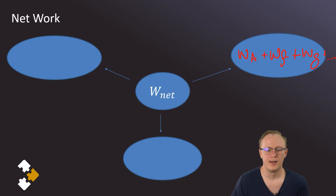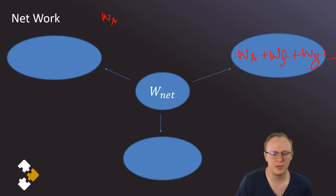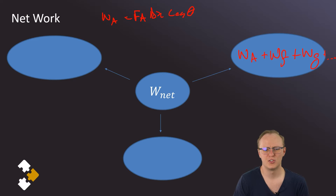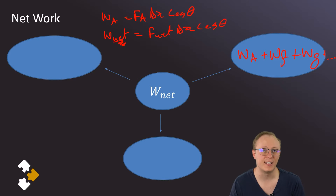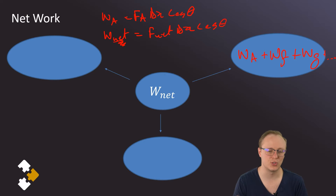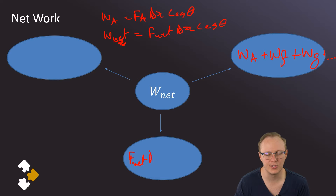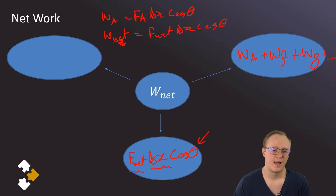That's one way to find the net work. The other way: the work done by an applied force equals that force times the displacement times cosθ. So W_net is actually the work done by the net force. If we can find the net force, we use it to find the net work: W_net = F_net · Δx · cosθ, where θ is the angle between Δx and F_net.